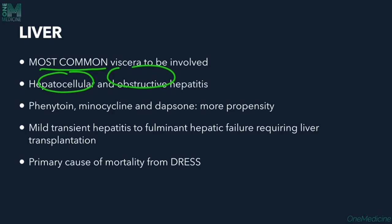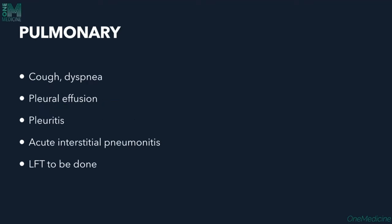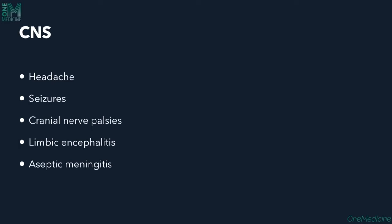The liver is the most common visceral organ involved. Hepatocellular and obstructive hepatitis are seen, with higher propensity when phenytoin, minocycline, or dapsone are causative drugs. Severity ranges from mild transient hepatitis to fulminant hepatic failure requiring transplantation. Pulmonary manifestations include cough, dyspnea, pleural effusion, pleuritis, and acute interstitial pneumonitis. Renal, liver function tests, and pulmonary function tests should be performed.